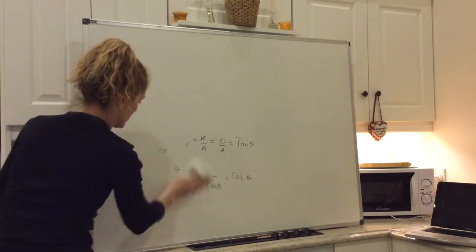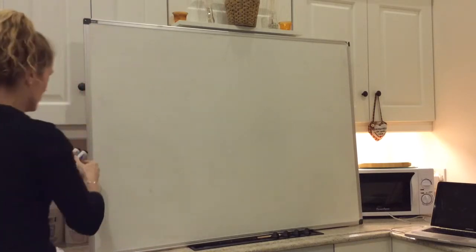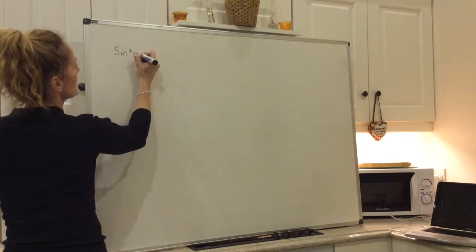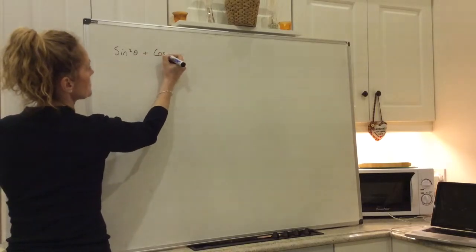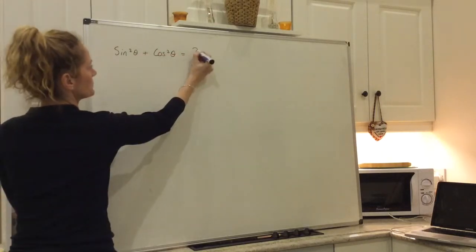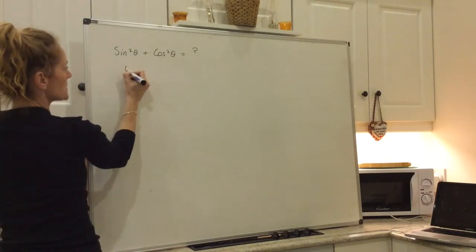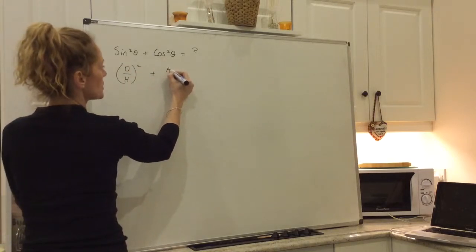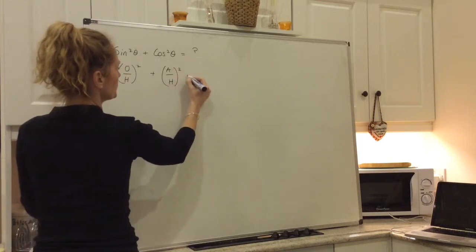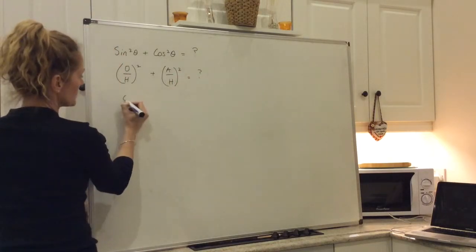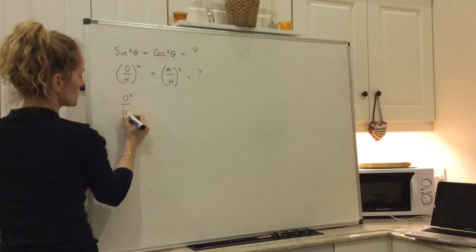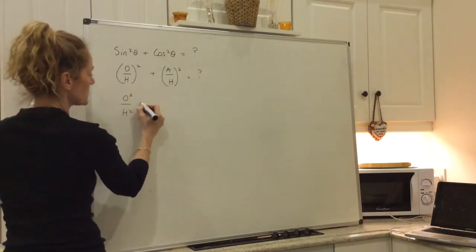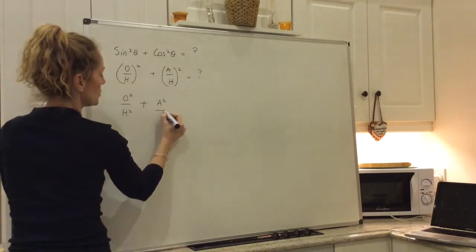The next thing I want to show you is what sine squared theta plus cosine squared theta is equal to. So sine theta is opposite over hypotenuse. So opposite over hypotenuse squared plus adjacent over hypotenuse squared — that's O squared over H squared, because O over H multiplied by O over H, top by top, bottom by bottom — O squared over H squared plus A squared over H squared.